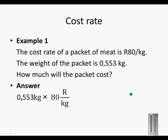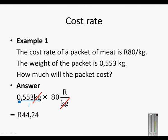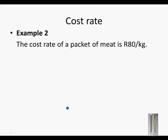We have a kilogram above the line — remember this is the same as 0.553 over 1 — so the kilogram above the line and the kilogram below the line will divide into each other. All that will be left is the Rand above the line, which is the unit that we want. So we go 0.553 times 80, and that gives the price: 44.24 Rand.